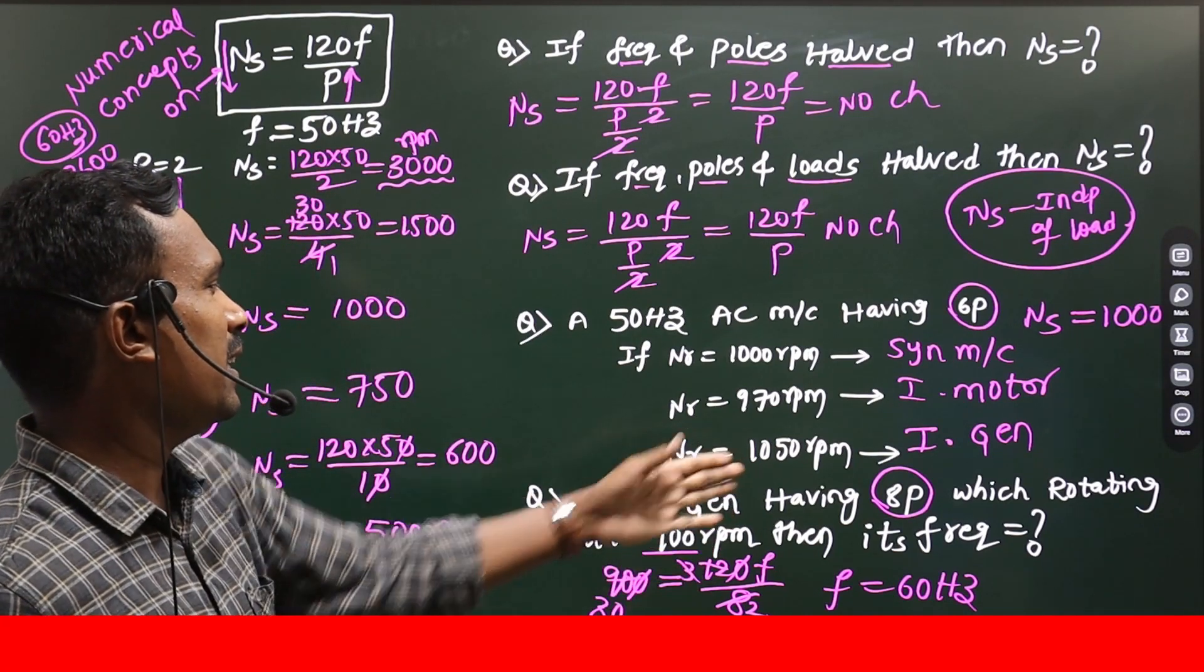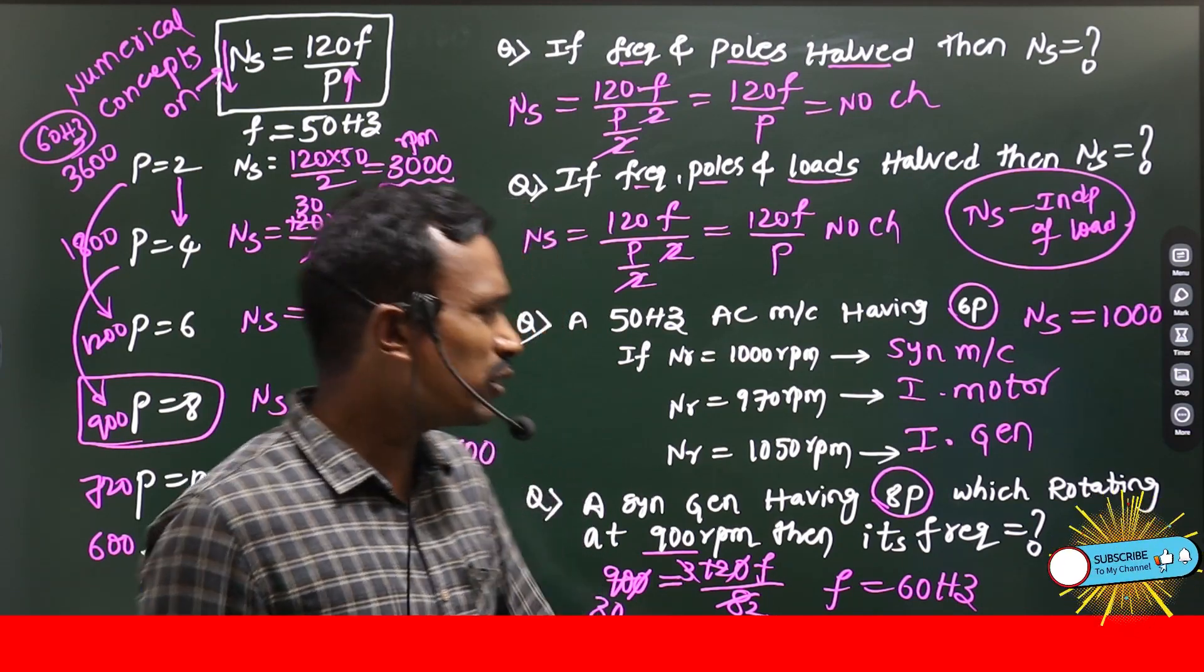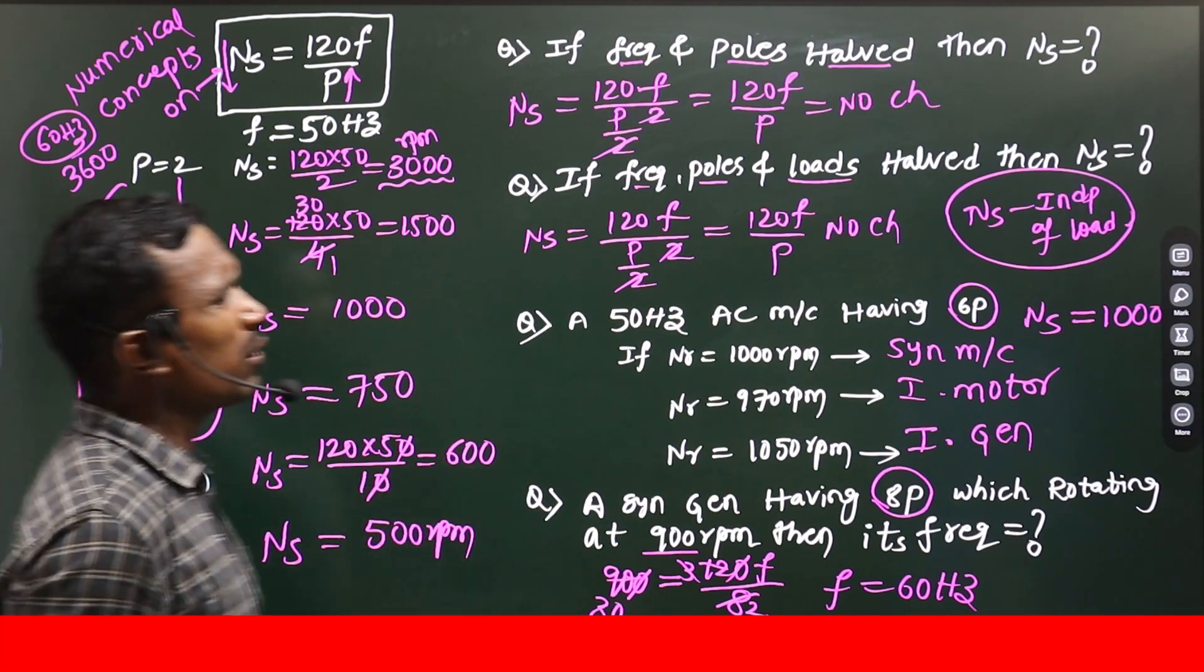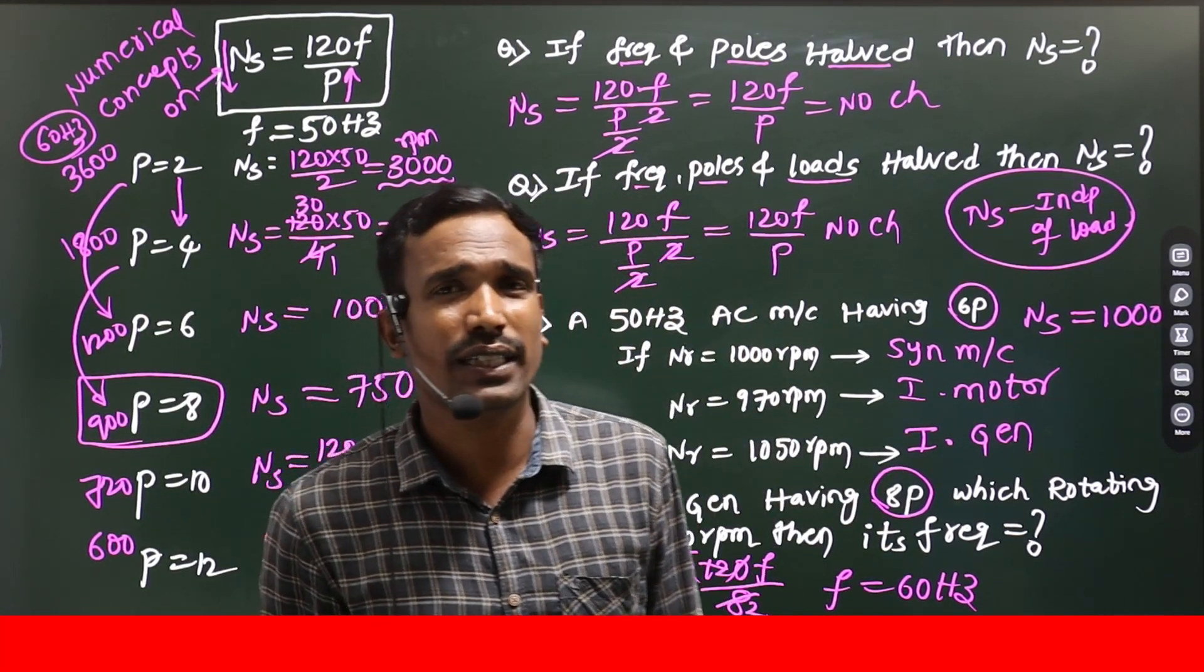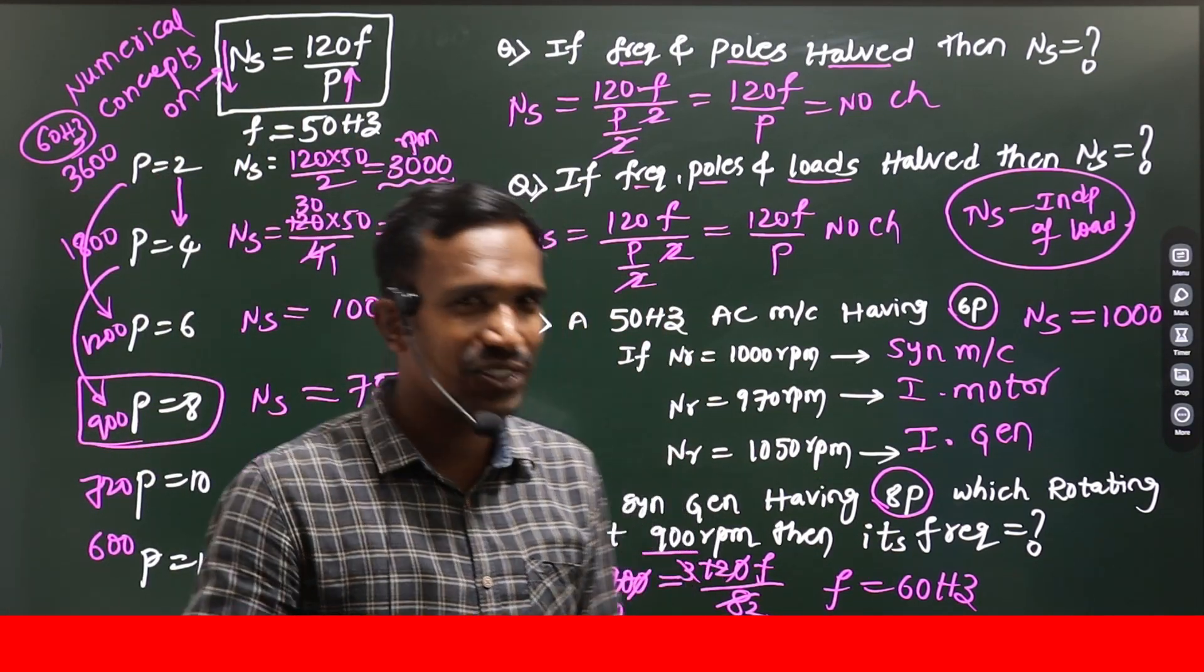Okay guys. So, simply 8 pole 900 rpm nothing but 60 hertz. Otherwise, you can calculate easily. So, like a few numerical questions they are asking in our competitive examinations. This is what exactly the numerical questions concepts based on synchronous speed. Thank you.